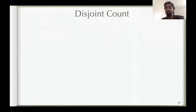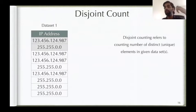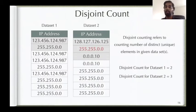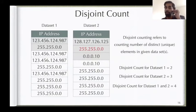The specific problem we consider is disjoint count, which simply means how many unique items are in a given dataset. For example, a dataset with IP addresses that repeat has a disjoint count of two. You can also consider disjoint counts across multiple datasets — if two datasets share a common IP address, the combined disjoint count is four. This is what we want to compute in a multi-party setting.